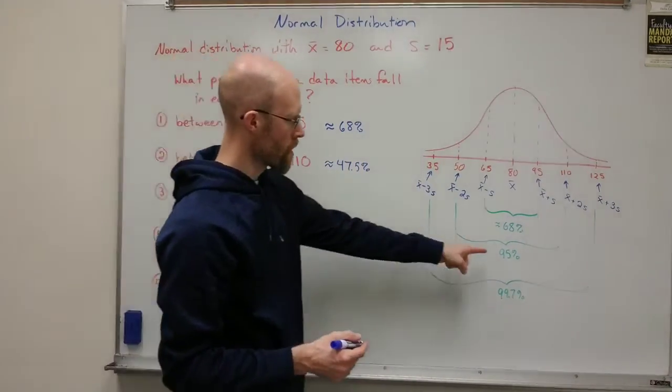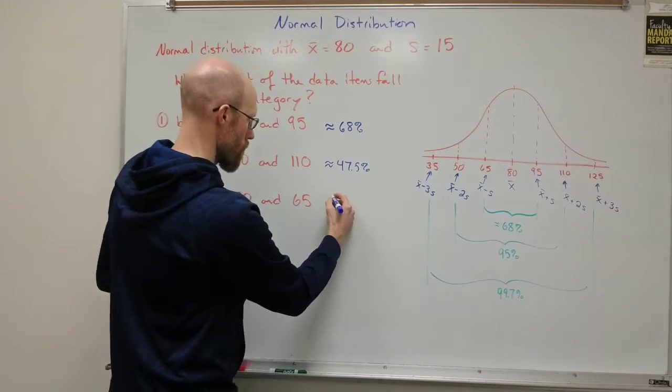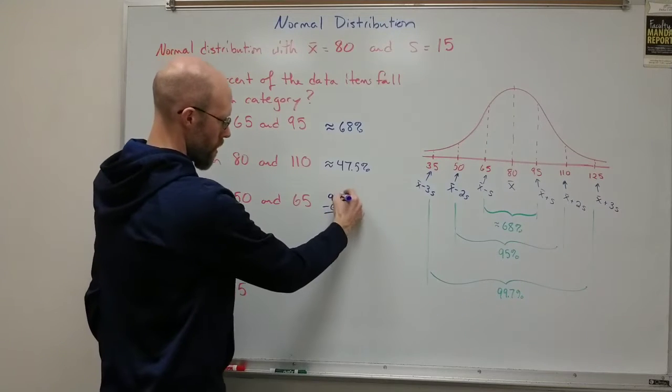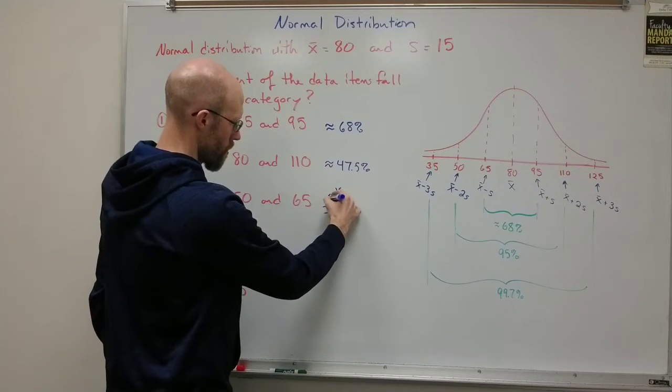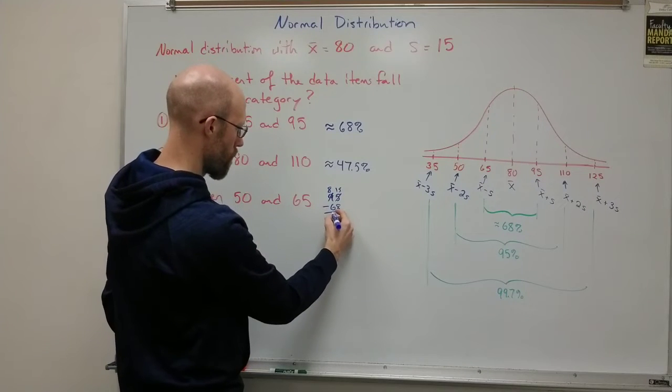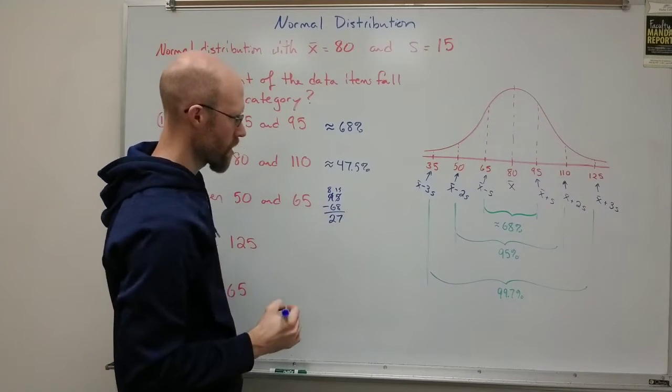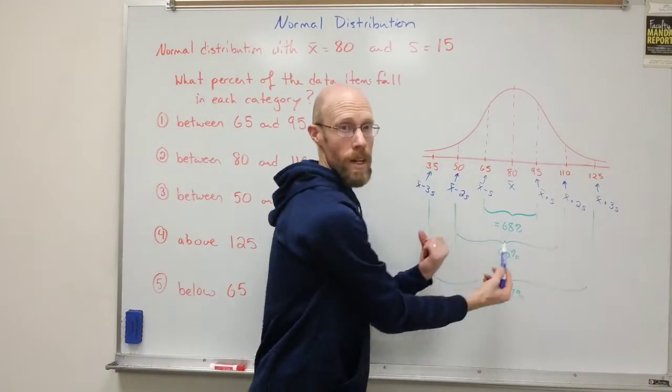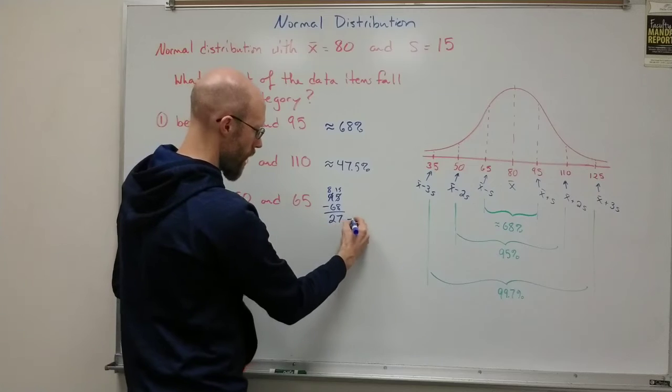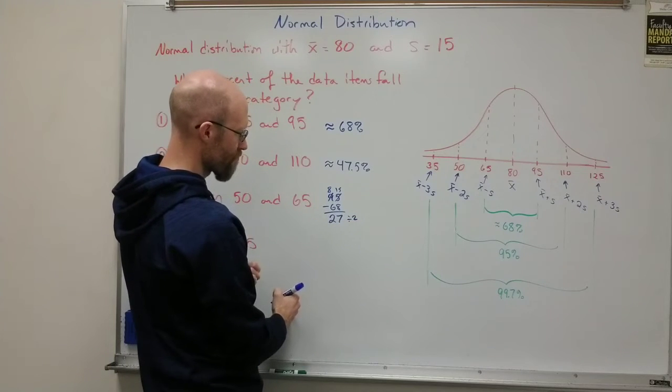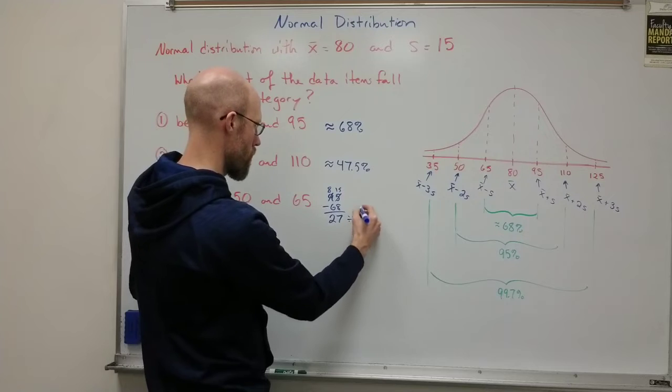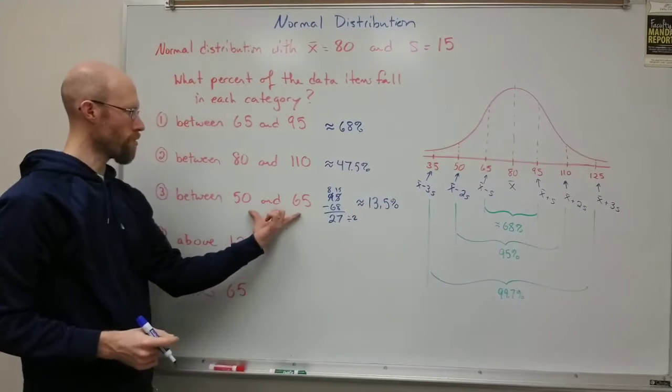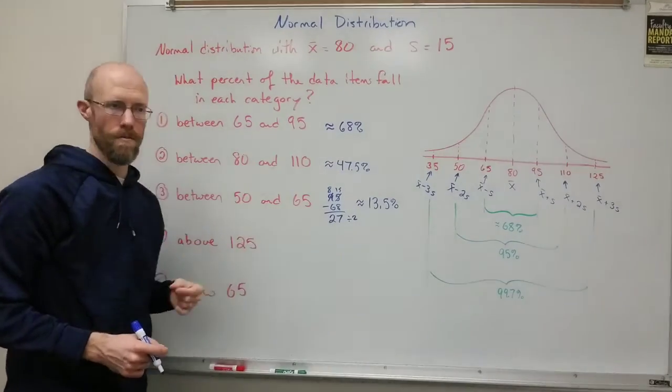So what I'm going to do is take the difference between the two. So that would be 95 minus 68. That's 27. And if I cut that, so 27 has to fill in both sides here, the right and the left. And if I cut that in half, that's going to give me 13 and a half. So approximately 13.5% of the data will fall between 50 and 65.